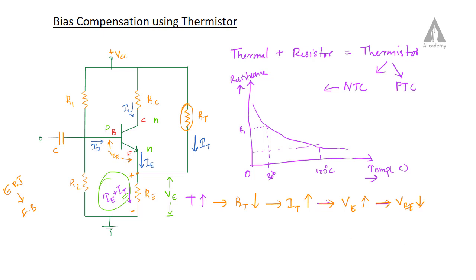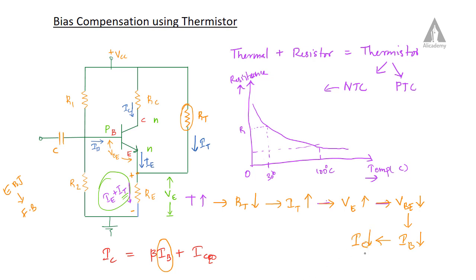When the forward voltage decreases, IB decreases. From the IC equation: IC = beta × IB + ICEO, where ICEO is the reverse saturation leakage current. When IB decreases, obviously IC decreases.